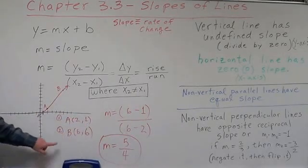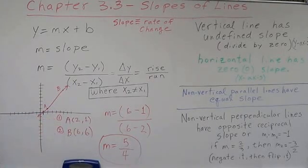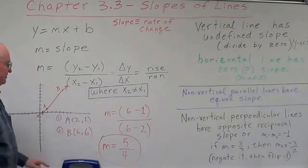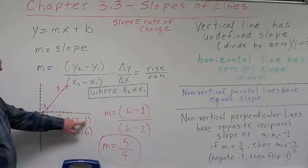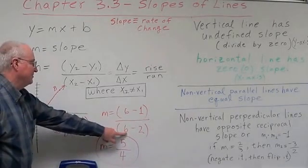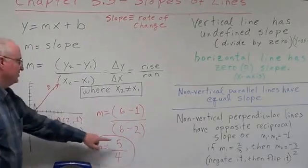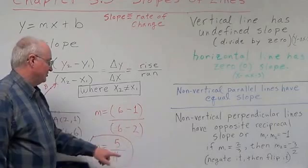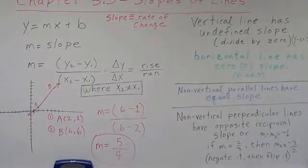For an example, we have two points. Point A is (2, 1), point B is (6, 6). We're going to define A as our first point and B as our second point. So therefore using this equation, we're going to say m equals y of point 2 which is 6 minus the y of point 1 which is 1, divided by the x of point 2 which is 6 minus the x of point 1 which is 2. 6 minus 1 is 5, 6 minus 2 is 4, so the slope of this particular line would be 5 divided by 4. That would be a little bit greater than 1.